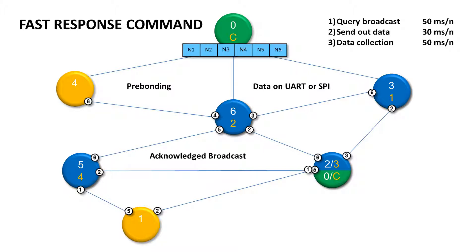The third predefined FRC is the acknowledge broadcast. This means that when you send this predefined FRC, you get a feedback from each node if the DPA request was performed or not. So for example, when you send an acknowledge broadcast command to switch on all lights, you'll get a feedback showing which light was and which one wasn't successfully switched on. This helps you to have your broadcast commands fully under control.